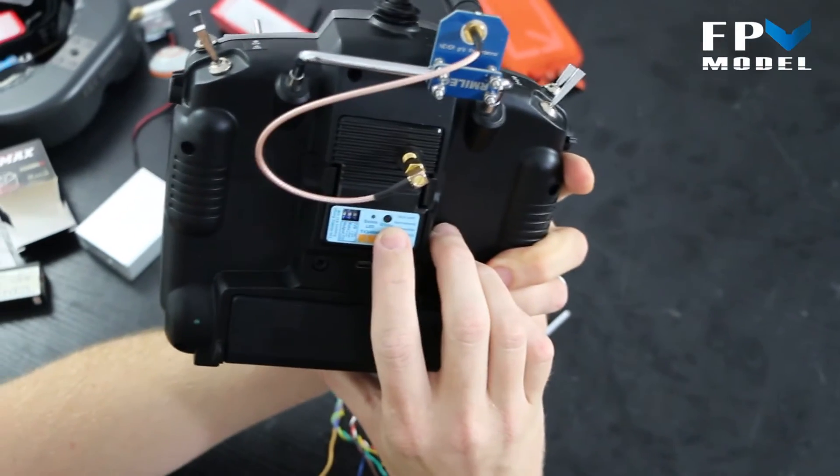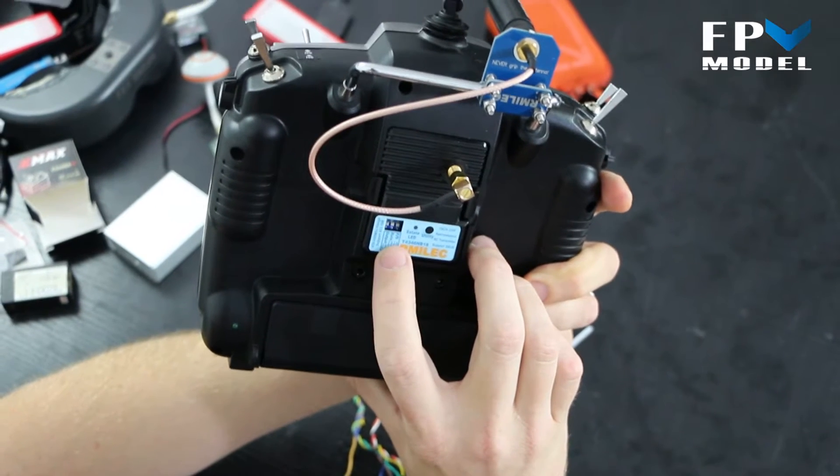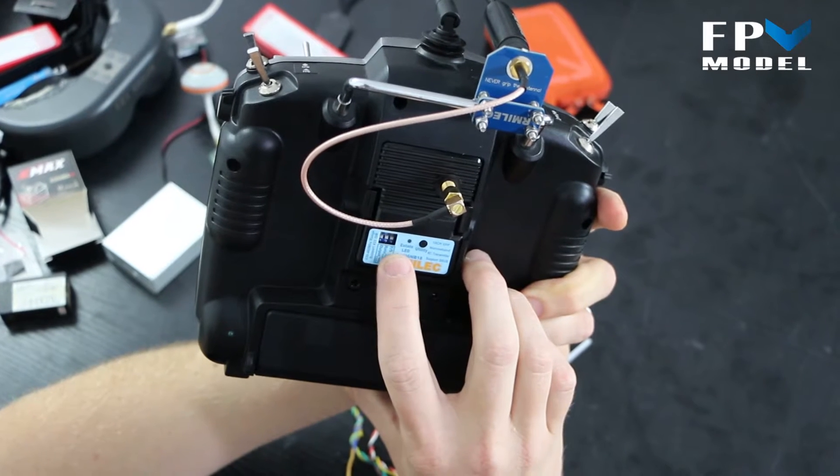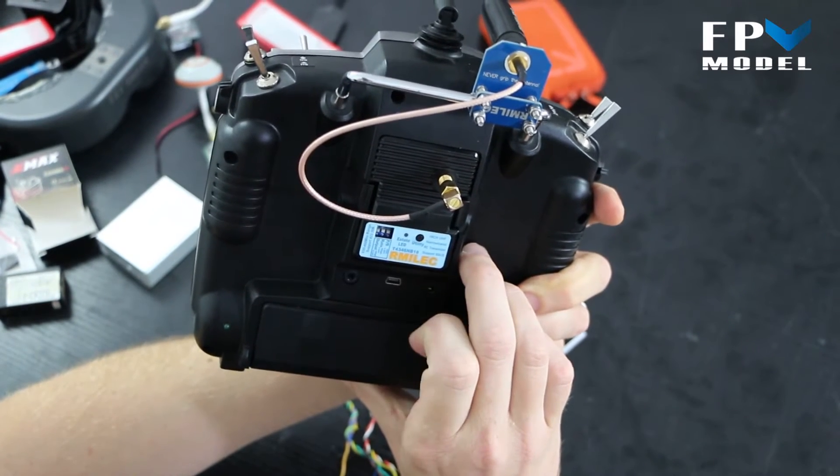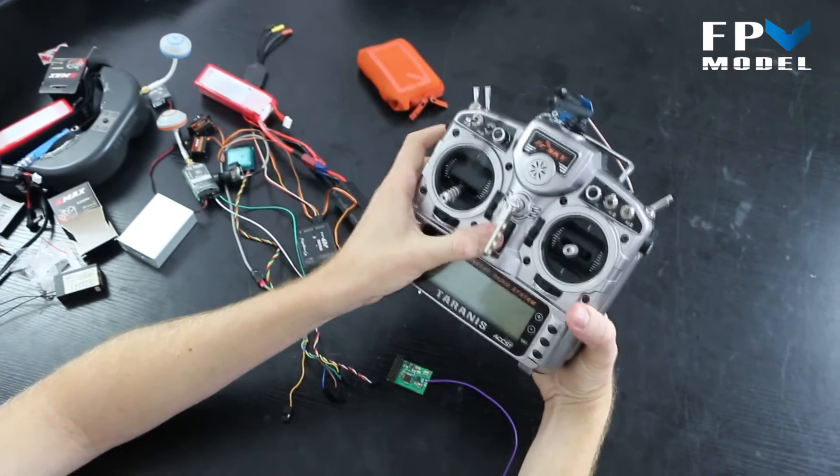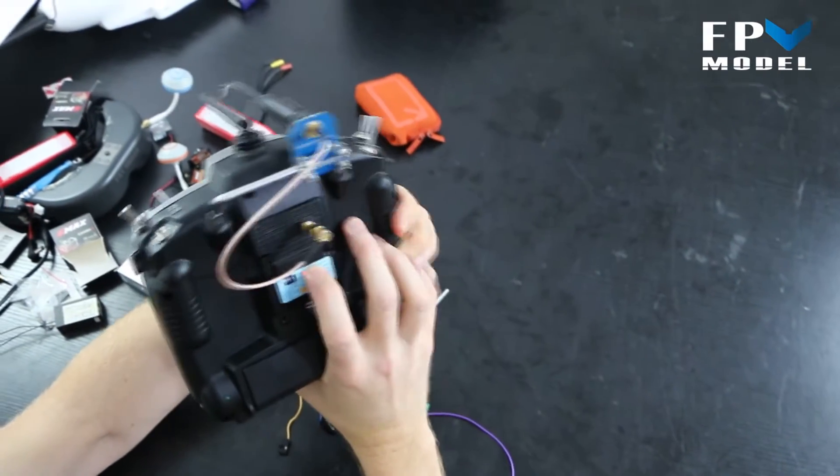You'll want to hold this down for five seconds. Make sure that your fail safe, your rate, and your output are in the lower position, so the fail safe is off and the rate and output are on low. I'm going to press the button, turn the radio on, and wait five seconds.